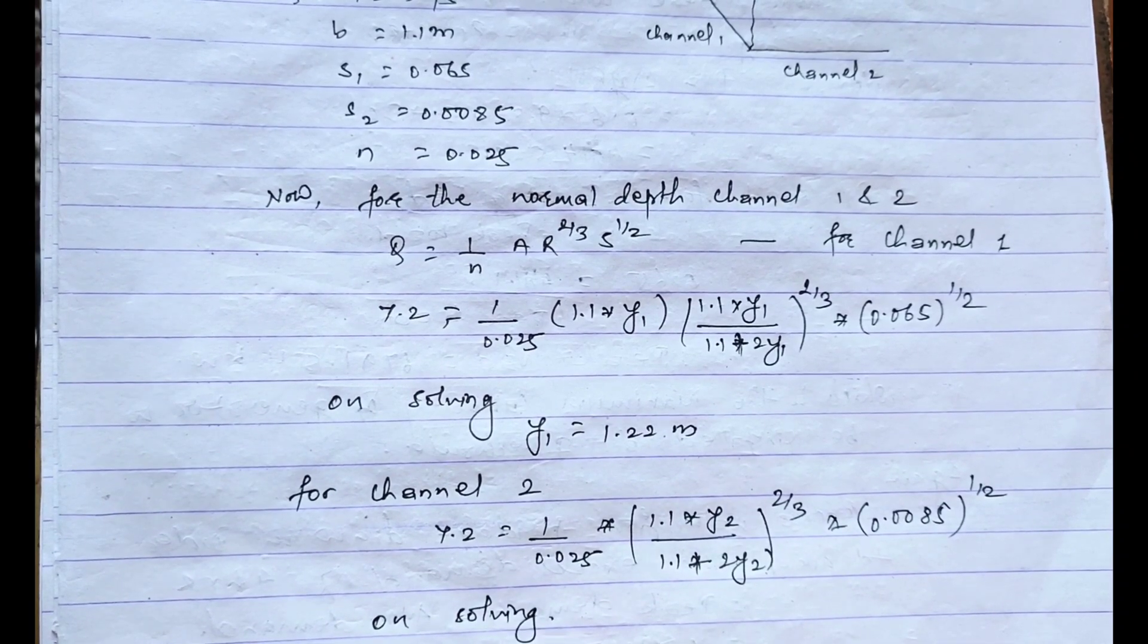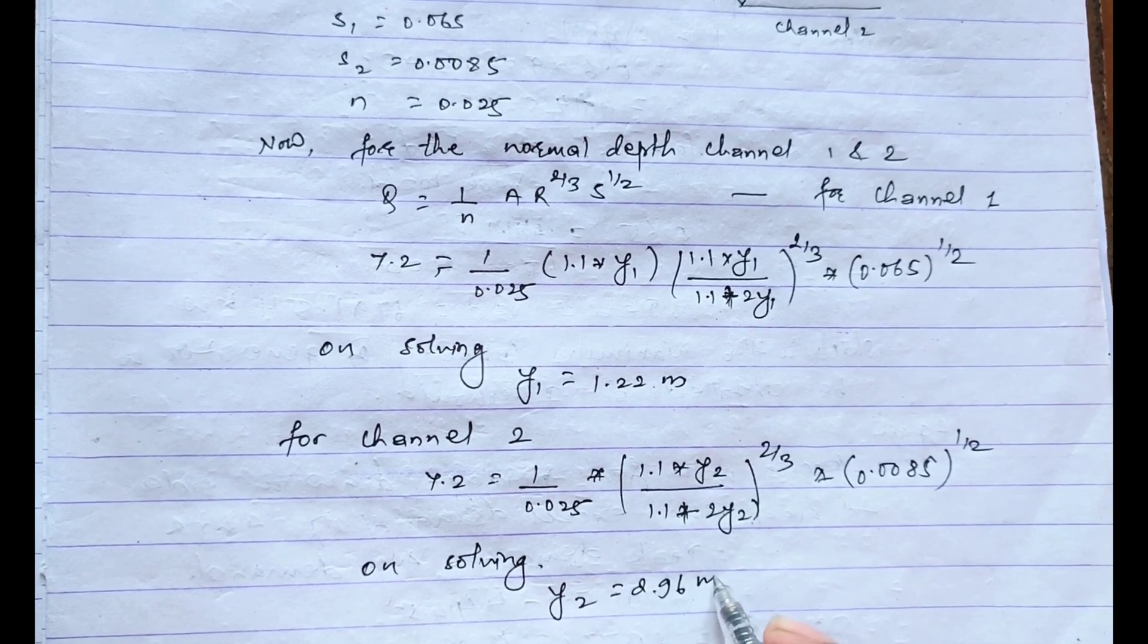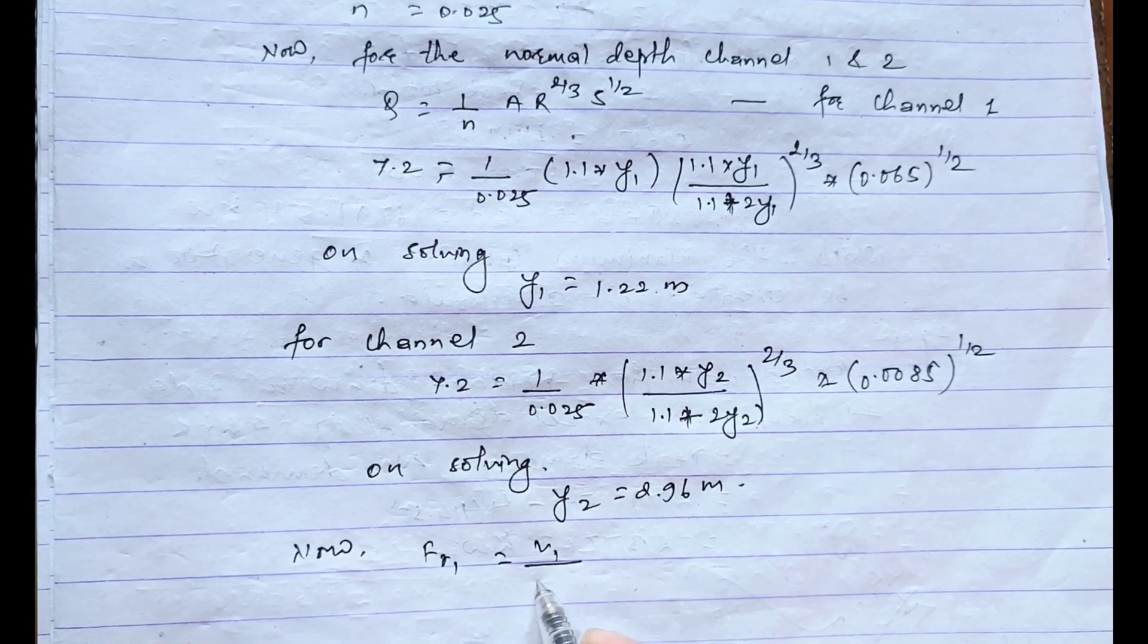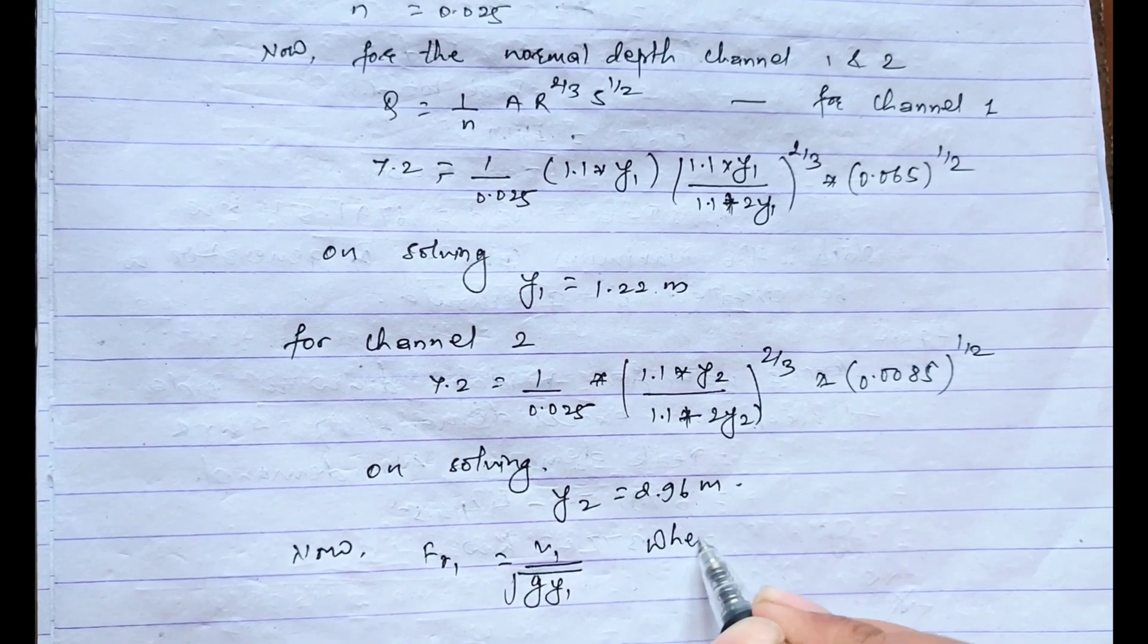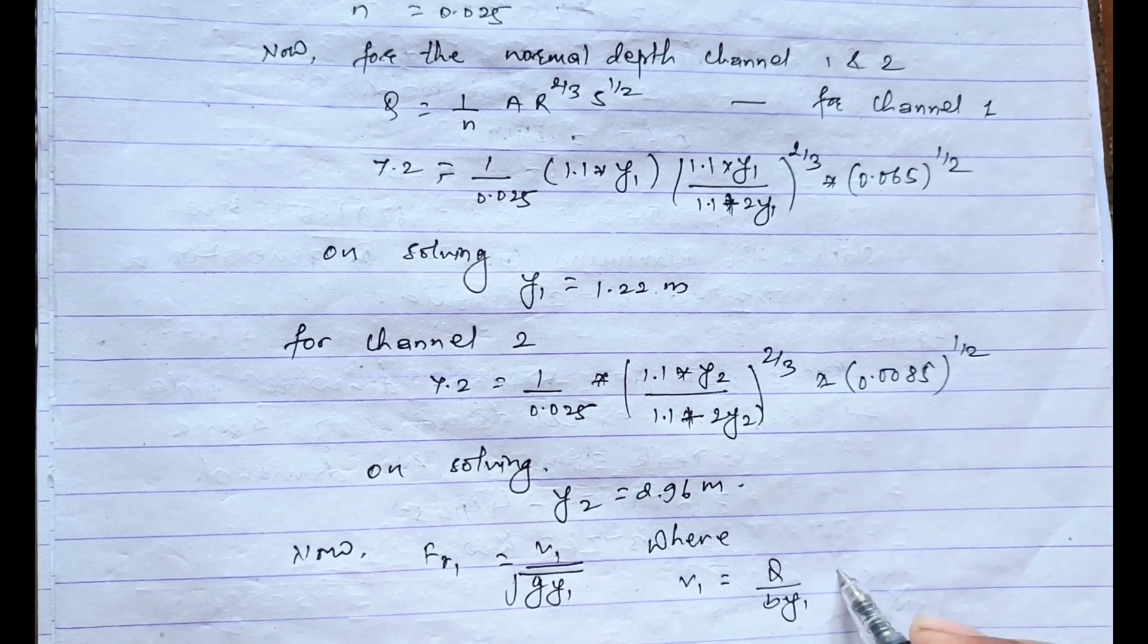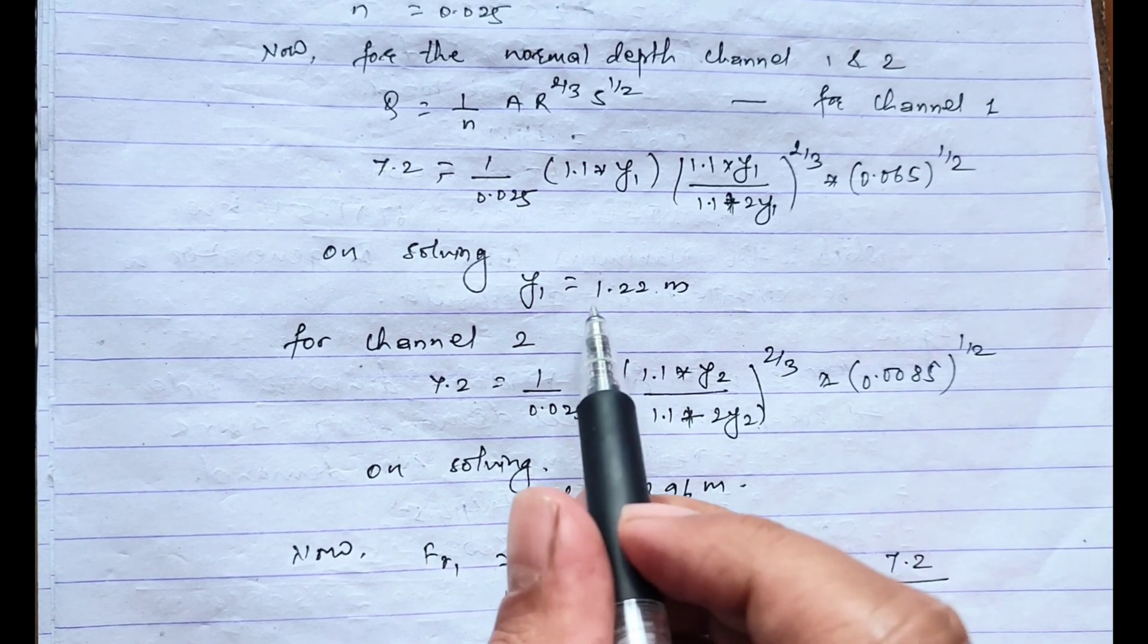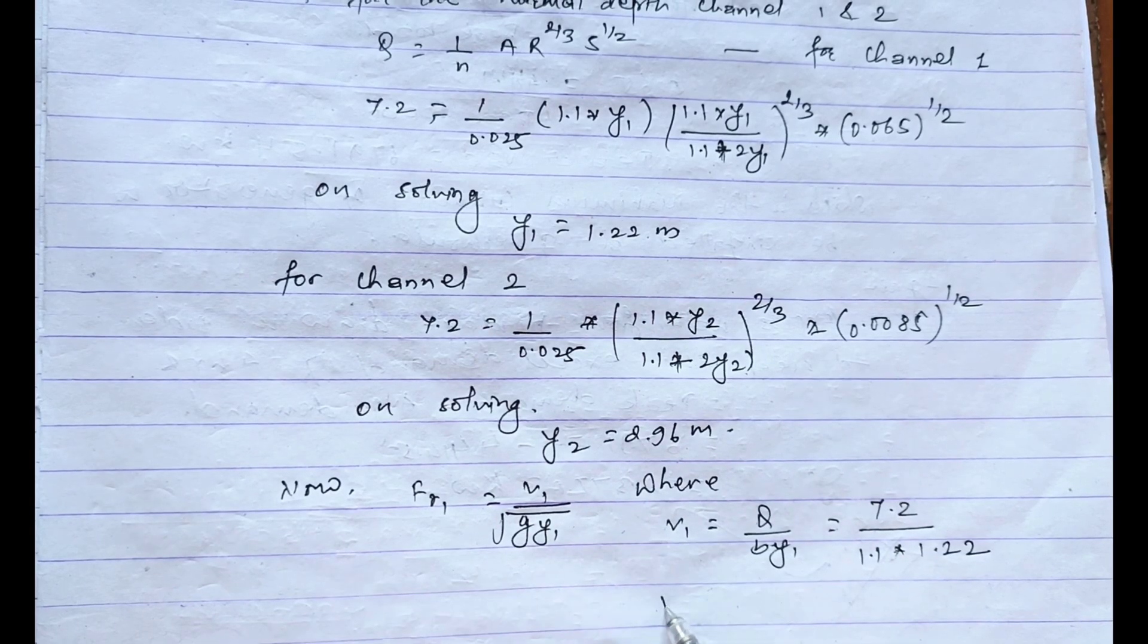On solving this, the value of y2 equals 2.96 meter. Now for the calculation of Froude number, Fr1 equals V1 by root g y1, where V1 equals Q by B y1. The value of Q is 7.2 and the value of B is 1.1, and the value of y1 is 1.22.